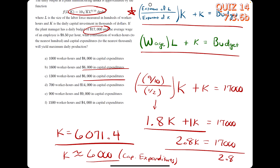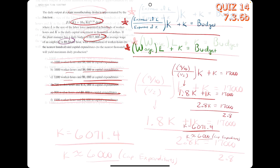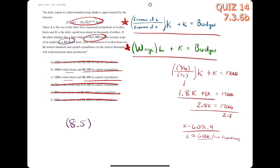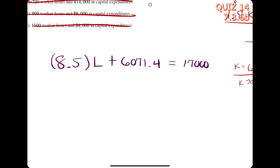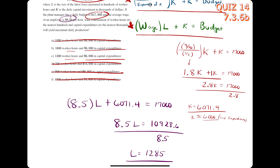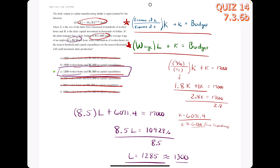Since 6,000 appears in two of the answers, we use the second equation to solve for l. We start with the wage of 8.50 times l, plus the k value of 6,071.4, set equal to the budget. Solving for l and dividing by 8.5, we get about 1,285, which rounds to 1,300 worker hours. So c is our answer.